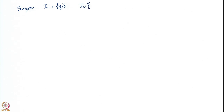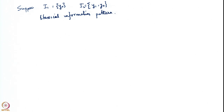Suppose now that the information at the first controller is just the observation y0. The information at the second controller — in the Witsenhausen problem it was only y1 — but I am now going to assume that he also has access to y0. This now is a classical information pattern.